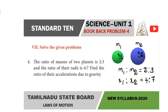The ratios of masses of 2 planets is 2 is to 3. So upon 2 planets, you can get the mass ratio. In the mass ratio, note 2 is to 3. So first planet mass is 2, second planet mass is 3. First planet is smaller than second planet.